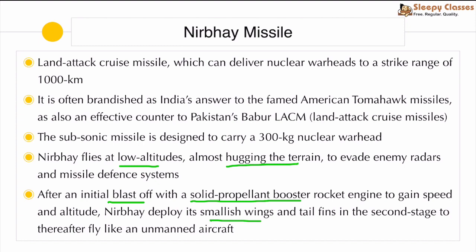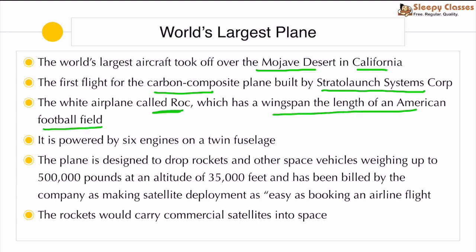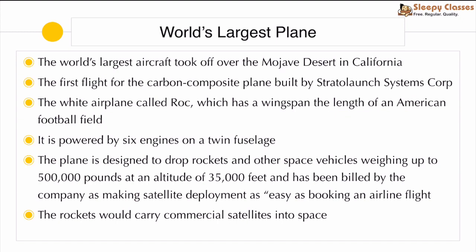Next, we have the world's largest plane, which took off from the Mojave Desert in California. This was the first flight for this carbon composite plane, made by Stratolaunch Systems Corporation. The plane has a wingspan the length of an American football field. It is powered by six engines on a twin fuselage design. The plane is designed to drop rockets and other space vehicles weighing up to five lakh pounds at an altitude of 35,000 feet, essentially serving as a rocket carrier to put commercial satellites into space.